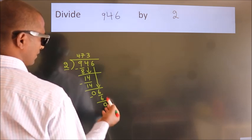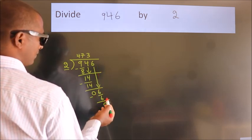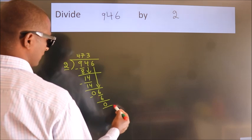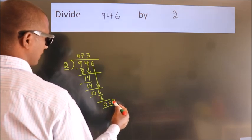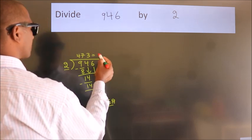After this, no more numbers to bring it down. So we stop here. This is our remainder. This is our quotient.